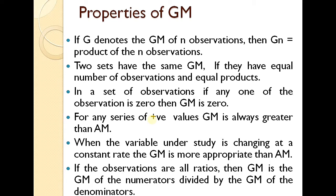For example, if one set of observations is zero — such as 2, 4, 5 — then GM is zero. For any series of positive values, GM is always greater than or equal to zero. If the variable is zero, then GM is zero.